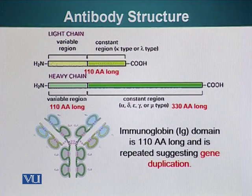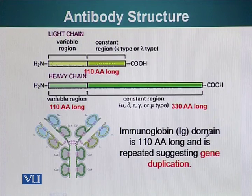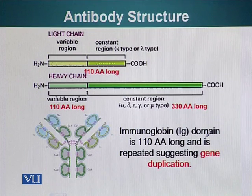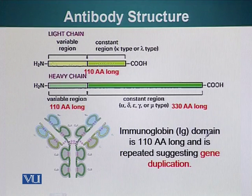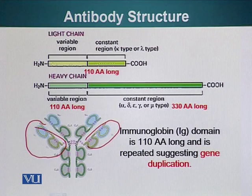Here the proteins are straightened out. The light chain is made up of 110 amino acids, and the heavy chain is made up of either 330 or 440 amino acids, depending on the type of antibody. The magic number is 110. It is thought that these larger structures, such as the heavy chain, evolved by gene duplication. These are the repeating 110-amino acid units that make up the antibody.